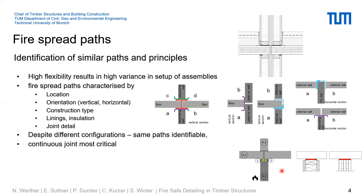Looking more closely at these aspects, you can identify similar paths, similar ways, and similar principles which result in the same methods. For instance, straight joints or continuous gaps in walls or floors result in the same method, as shown here. Most critical is always the straight joint to other compartments, which must be tightly jointed to avoid fire spread and smoke spread.